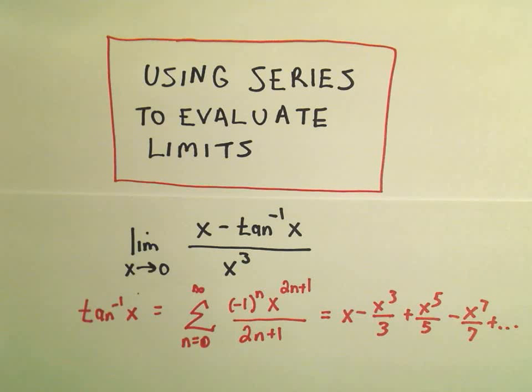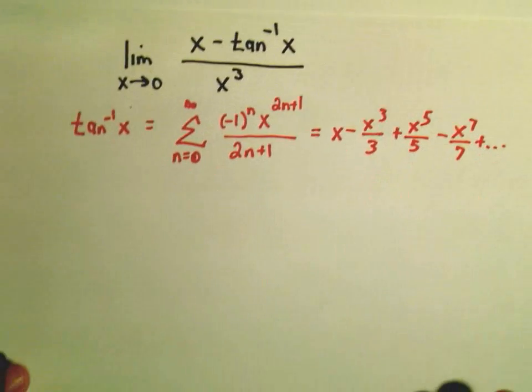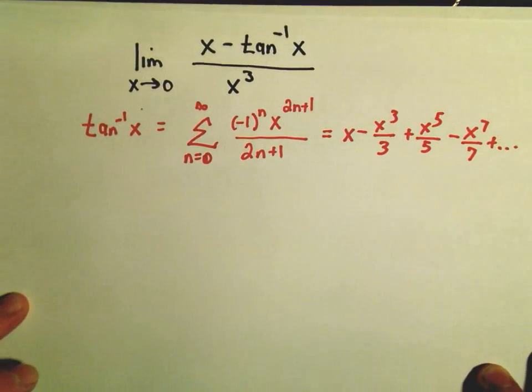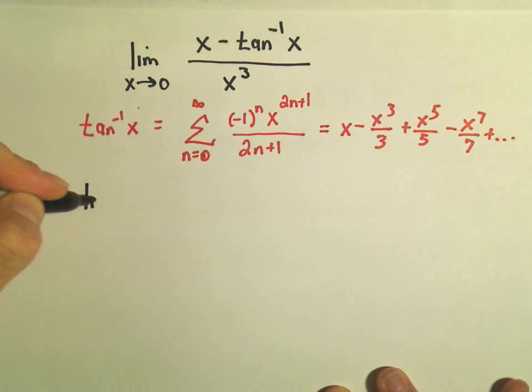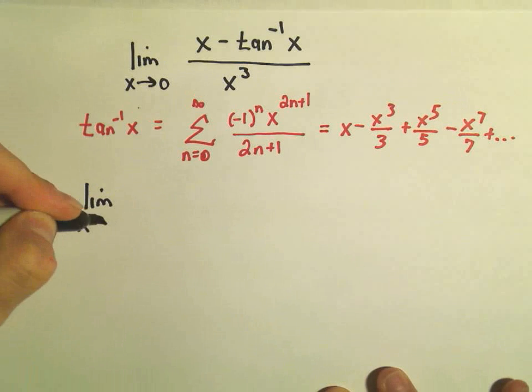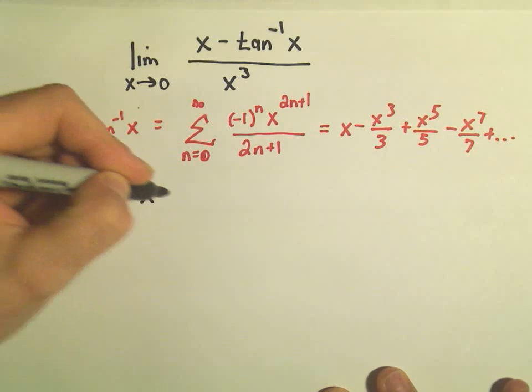So all I'm going to do is I'm just going to replace my arctangent with this expansion on the right side, and then hopefully we'll see some things canceling out. So we'll have the limit as x approaches 0. We've got x minus,